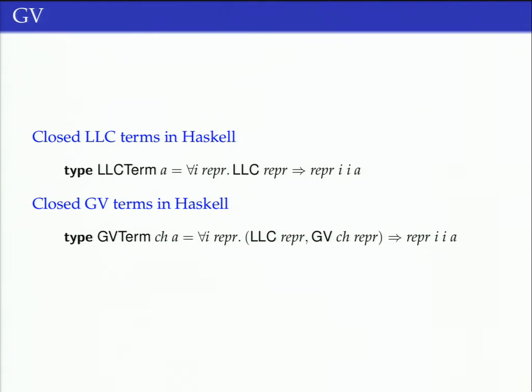Then we can define closed linear lambda calculus terms. This is how we define closed GV terms parameterized by a channel. You see here this is where we get the modularity: you just combine the constraints and it all works out nicely. Closed corresponds to not changing the linear environment at all.